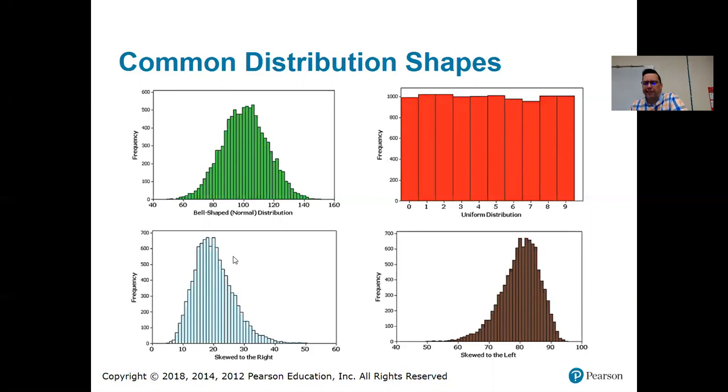This would be your exam that a whole bunch of people did badly on except for the one person that you like to say, ah, you ruined the curve. Just a very few people did well. Everybody else kind of bombed it. That gives you a distribution that's skewed to the right. And then the opposite on the bottom right is skewed to the left.